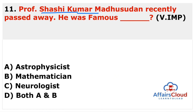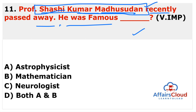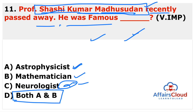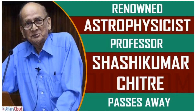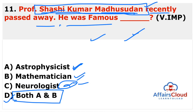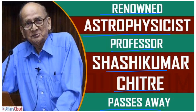Next question: Professor Shashi Kumar Madhusudhan recently passed away — he was famous for which field? The answer is both astrophysics and mathematics. His full name was Professor Shashi Kumar Madhusudhan Chitre. He was a renowned astrophysicist and mathematician. He belonged to Maharashtra.